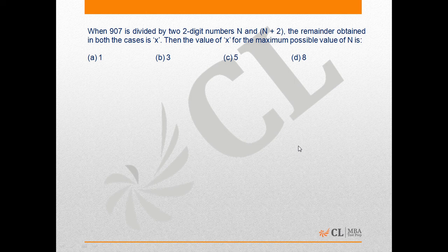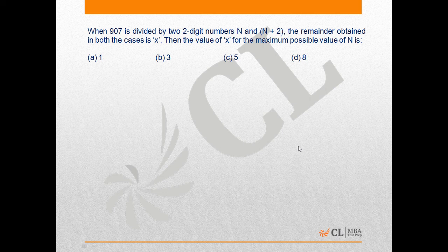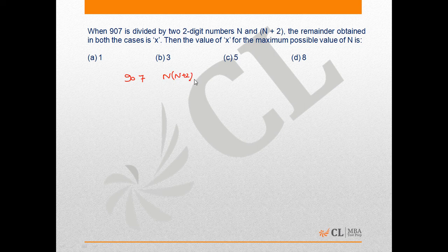When a number is divided by 2 different numbers and the remainder is same in both cases, the remainder will be the same when the number is divided by the product of those 2 numbers also. So 907 when divided by N×(N+2) will have remainder x.